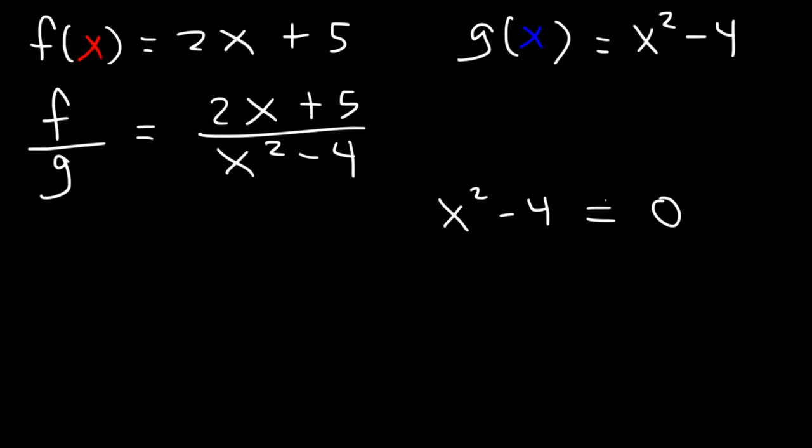x squared minus 4 cannot be 0. If it is, we're going to get a vertical asymptote, which means it's undefined at that point. Now we can factor x squared minus 4. It's x plus 2 times x minus 2. So therefore, x cannot equal negative 2, and it can't equal 2. These are the vertical asymptotes, but they're also infinite discontinuities.